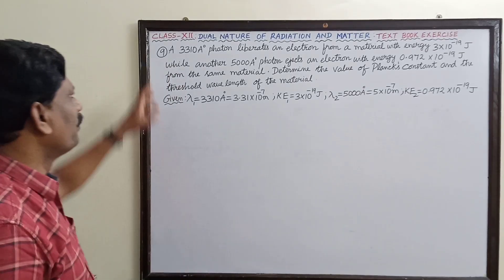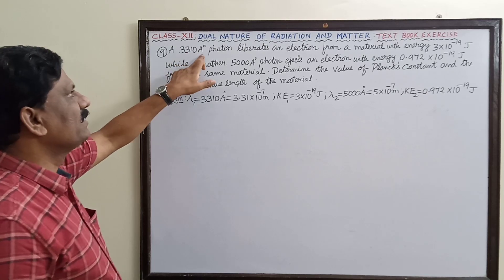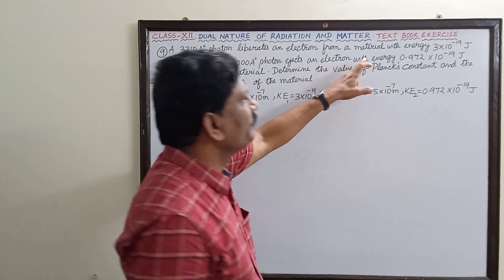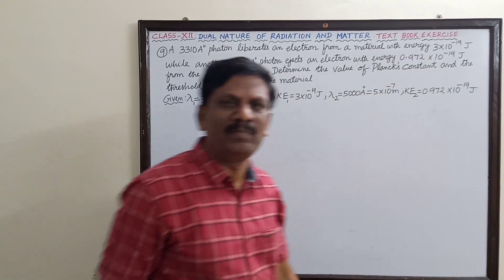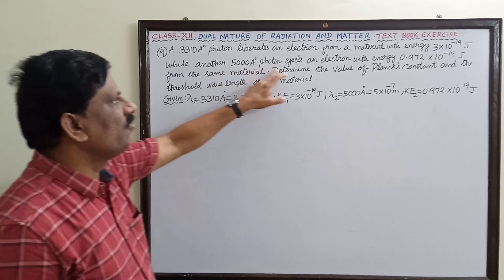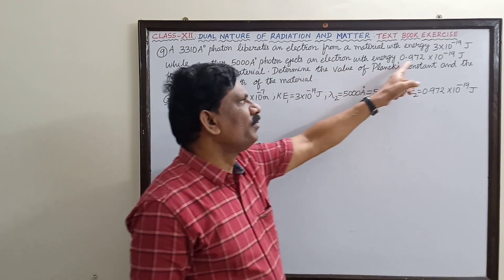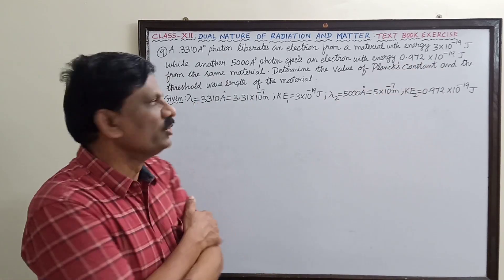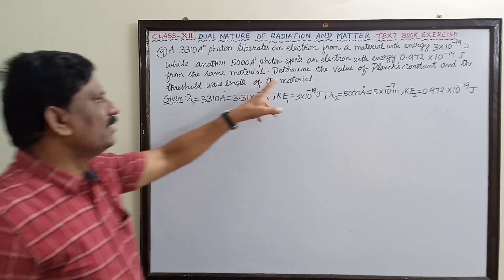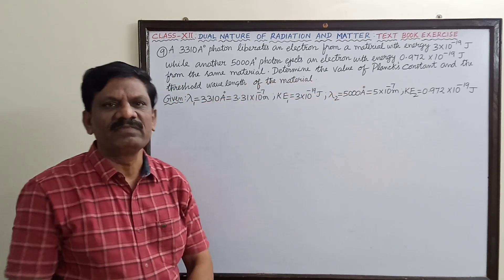Hi students, problem number 9. A 3310 angstrom photon liberates an electron from a material with energy 3×10⁻¹⁹ joule, while another 5000 angstrom photon ejects an electron with energy 0.972×10⁻¹⁹ joule from the same material. Determine the value of Planck's constant and the threshold wavelength of the material.